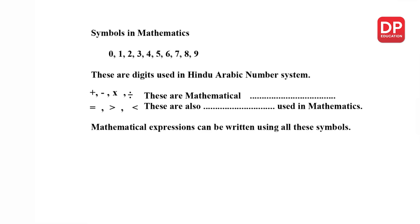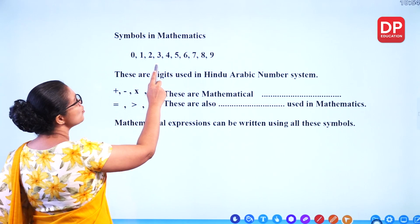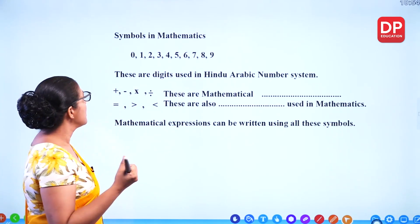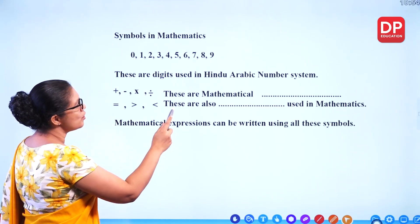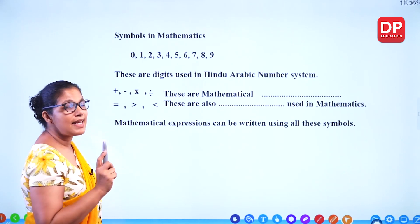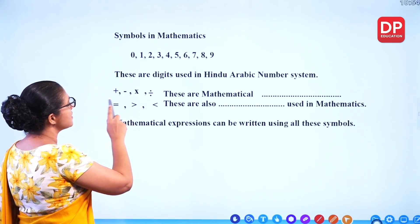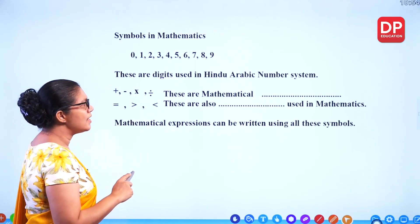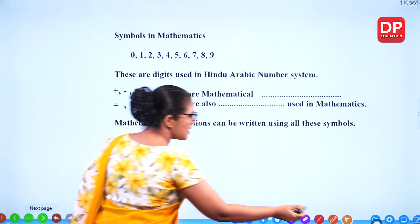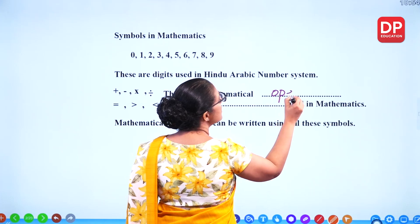What are the symbols in mathematics? We know 0, 1, 2, 3, 4 up to 9 — those are digits. These are digits used in the Hindu-Arabic number system, so we use 10 digits. What are these symbols? Plus, minus, multiplication, division — these are mathematical operations. So we use mathematical operations and digits.